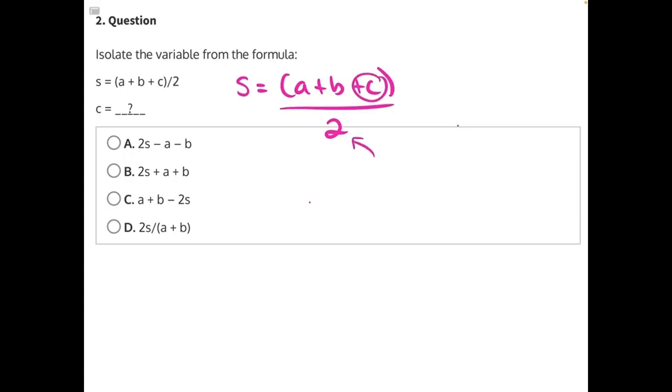c is being divided by 2, well really everything in these parentheses is being divided by 2, so we need to do the opposite operation, which is multiplication. Make sure you do it to both sides to keep the equation balanced. These twos are going to cancel, leaving us with 2s equals a plus b plus c.